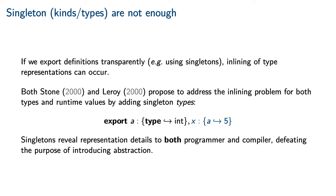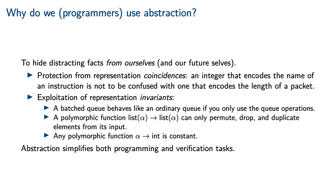We saw earlier that singleton kinds can be used to expose the representation of a type. Both Stone and Leroy proposed to address the inlining problem for both types and runtime values by adding an analogous singleton type connective, so that in an interface we could expose not only the definition of a given type but also the definition of an element of that type. Unfortunately, this solution is too naive. Singletons reveal representation details to both the programmer and the compiler, which defeats the purpose of introducing abstractions in the first place. The reason we even bother with abstractions is to hide distracting facts from ourselves and from our future selves, who tend to be more ignorant than our present selves.